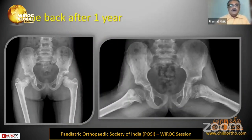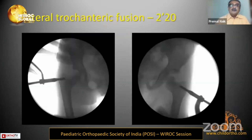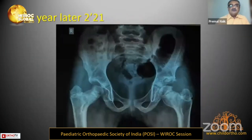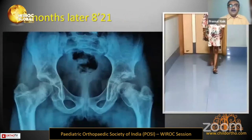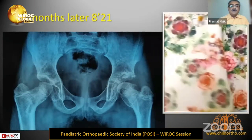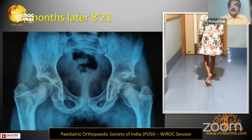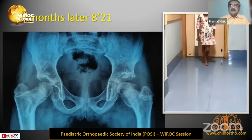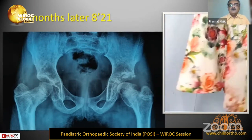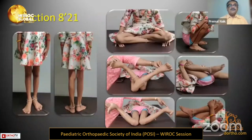During the same time the mother was pregnant with a second child, so she came back after one year. At that point there were articular trochanteric issues, so she had bilateral trochanteric fusion in 2020 — drilling and scooping of the trochanteric physis was done. A year later and after 18 months, there is trochanteric fusion but the femoral epiphysis is not developing, though her gait is absolutely normal. She may need some procedures in the future.